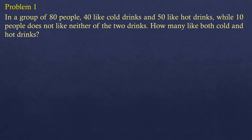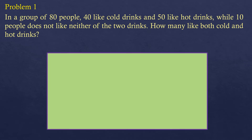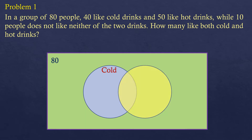First, we are going to put the universal set, which is denoted or illustrated using a rectangle, and this represents the 80 people. Then we are going to create a circle which represents those people who like cold drinks, and another circle for those who like hot drinks. It's given that there are 40 people who like cold drinks and 50 people who like hot drinks.